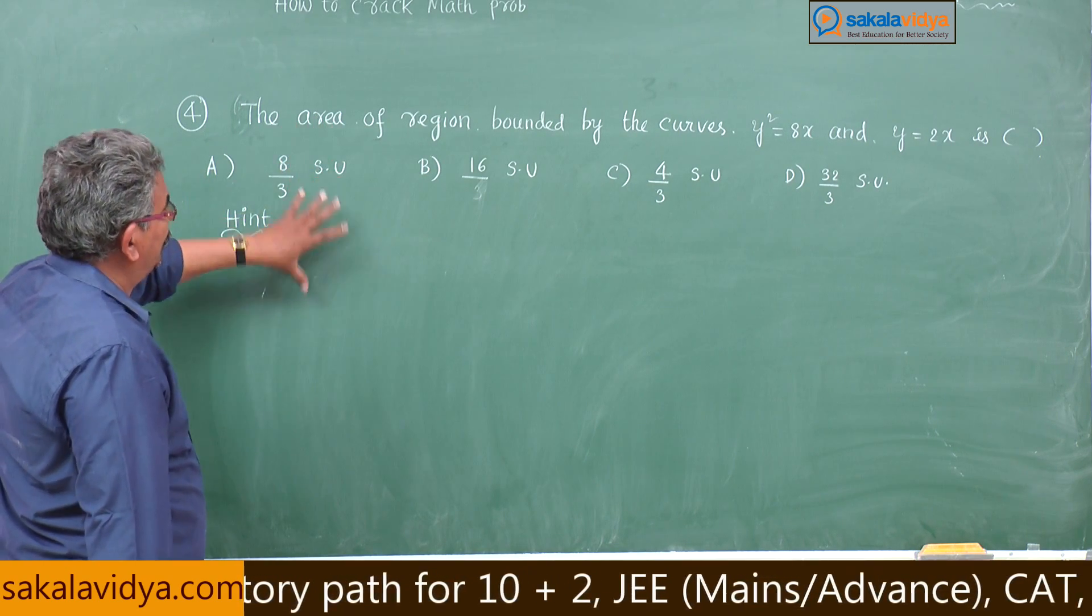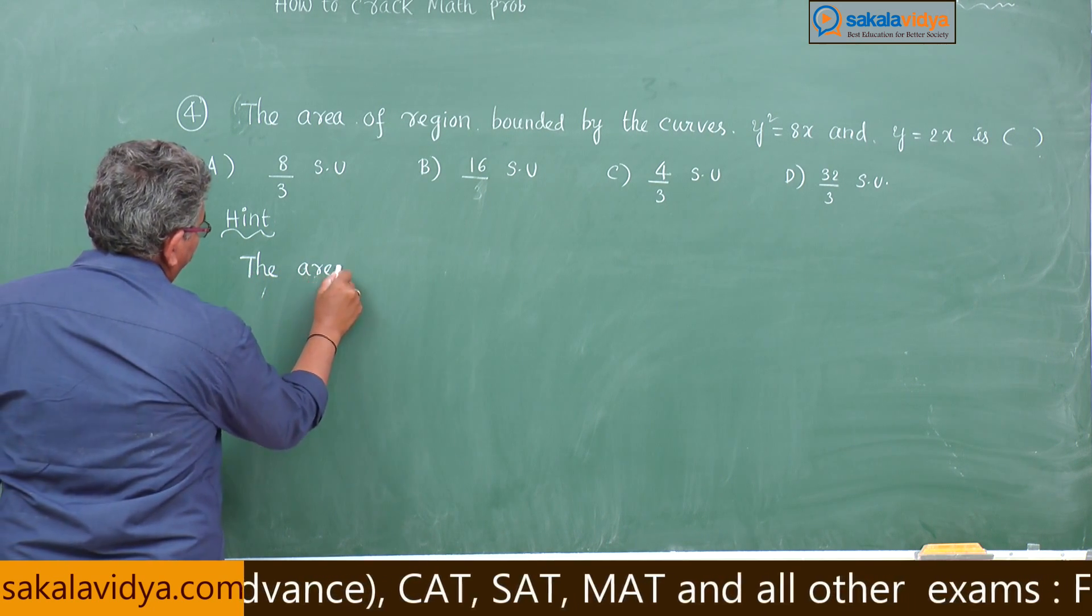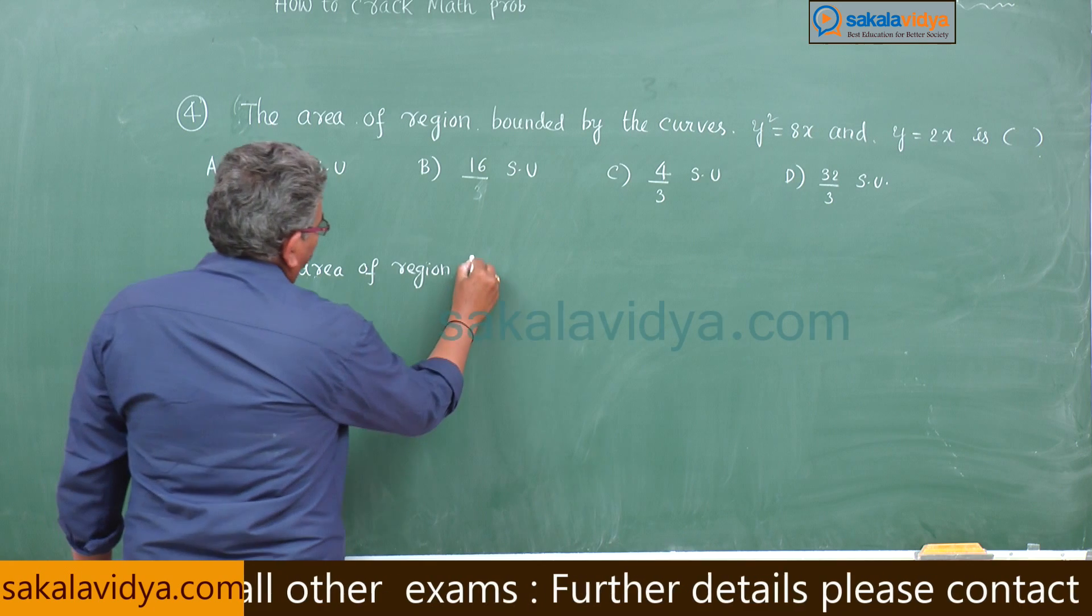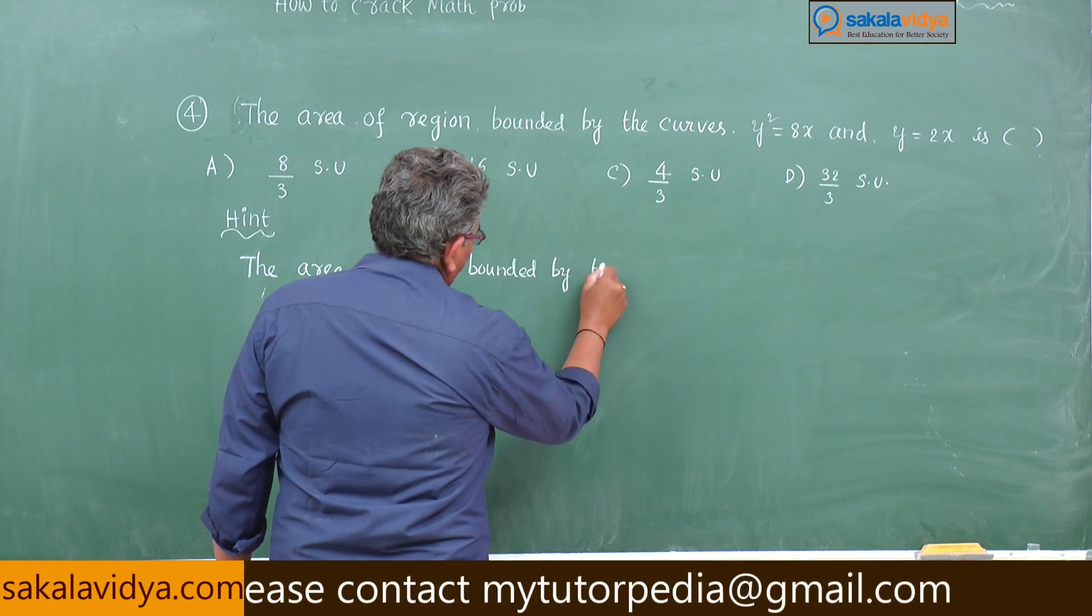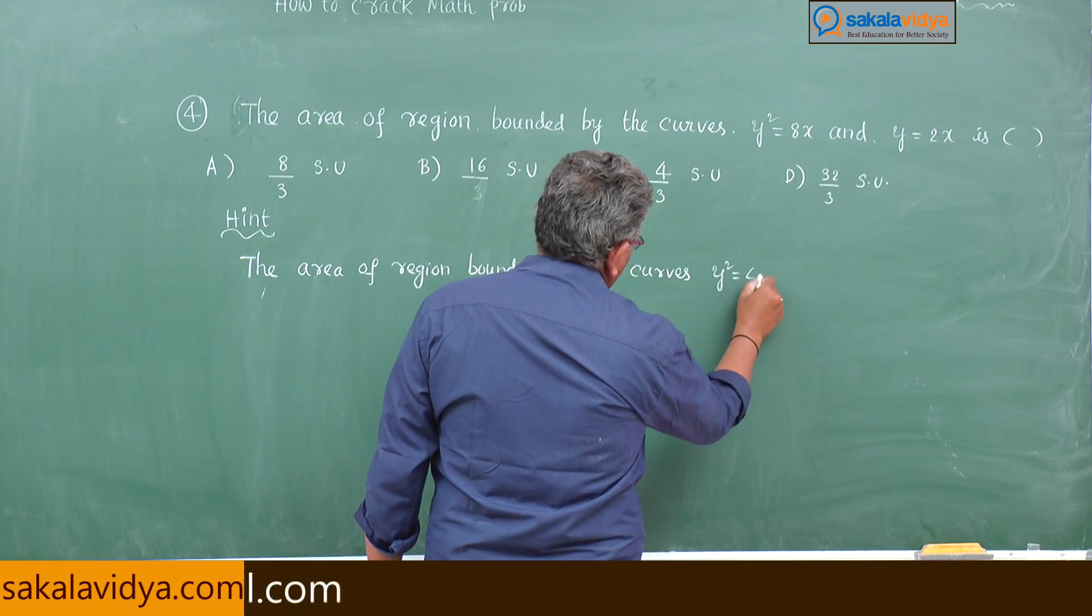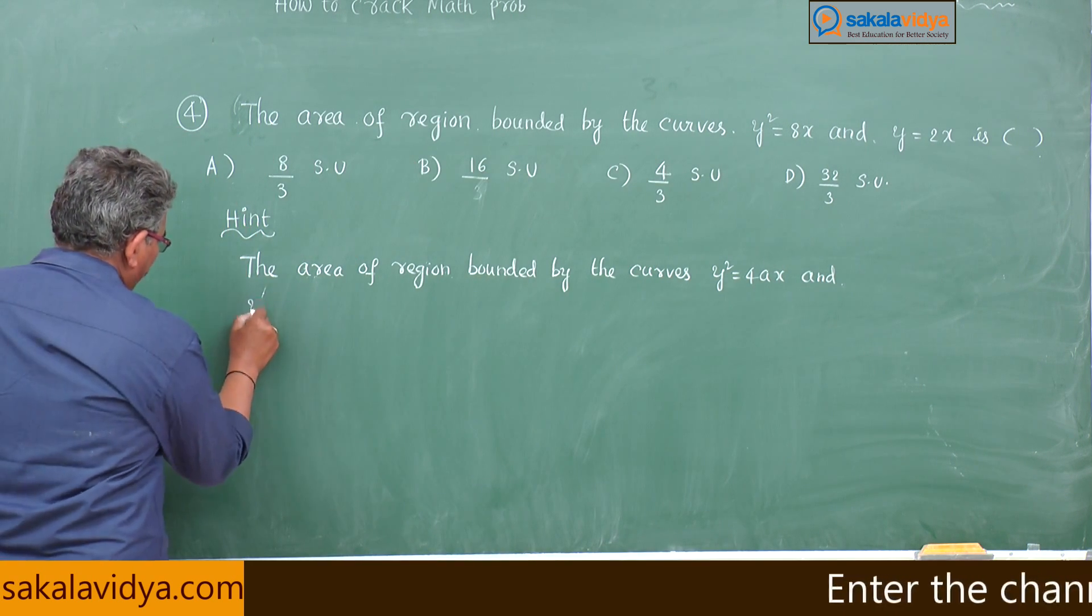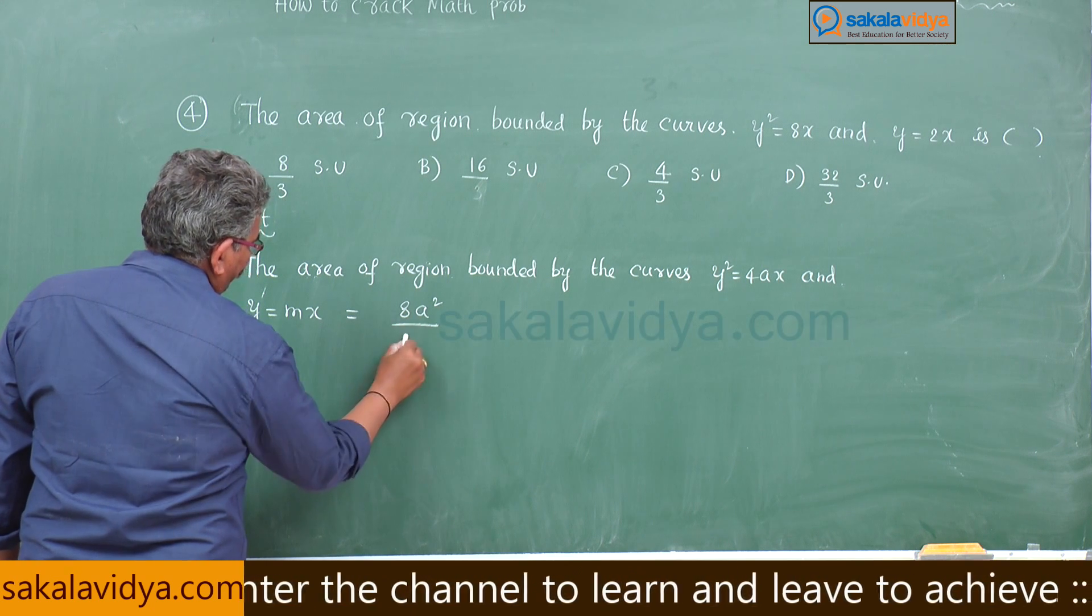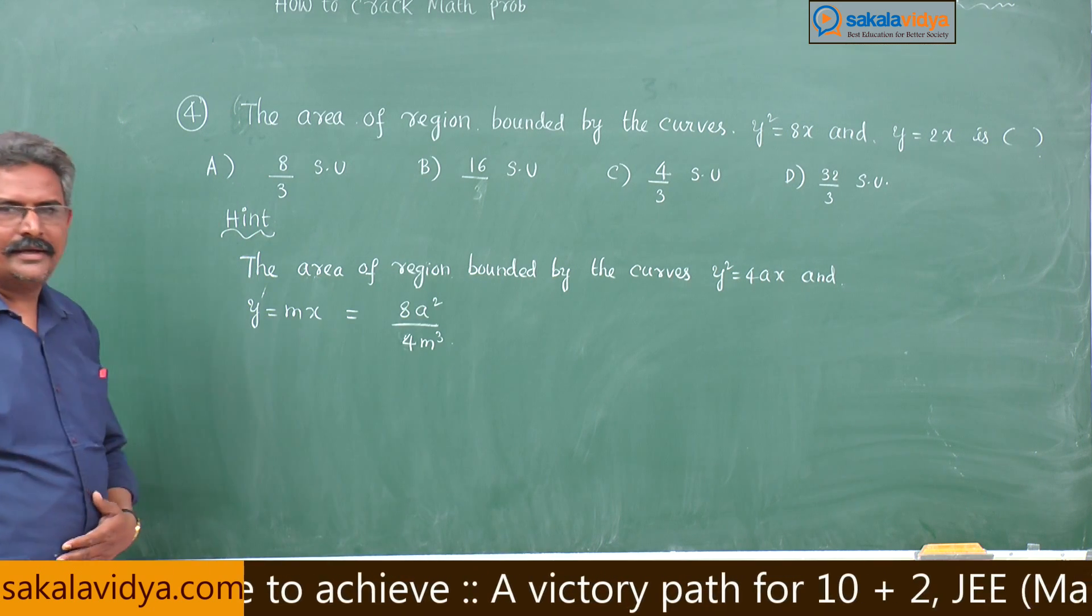The shortcut to solve this problem: the area of region bounded by the curves y square is equal to 4ax and y is equal to mx is equal to 8a square by 3m cube.